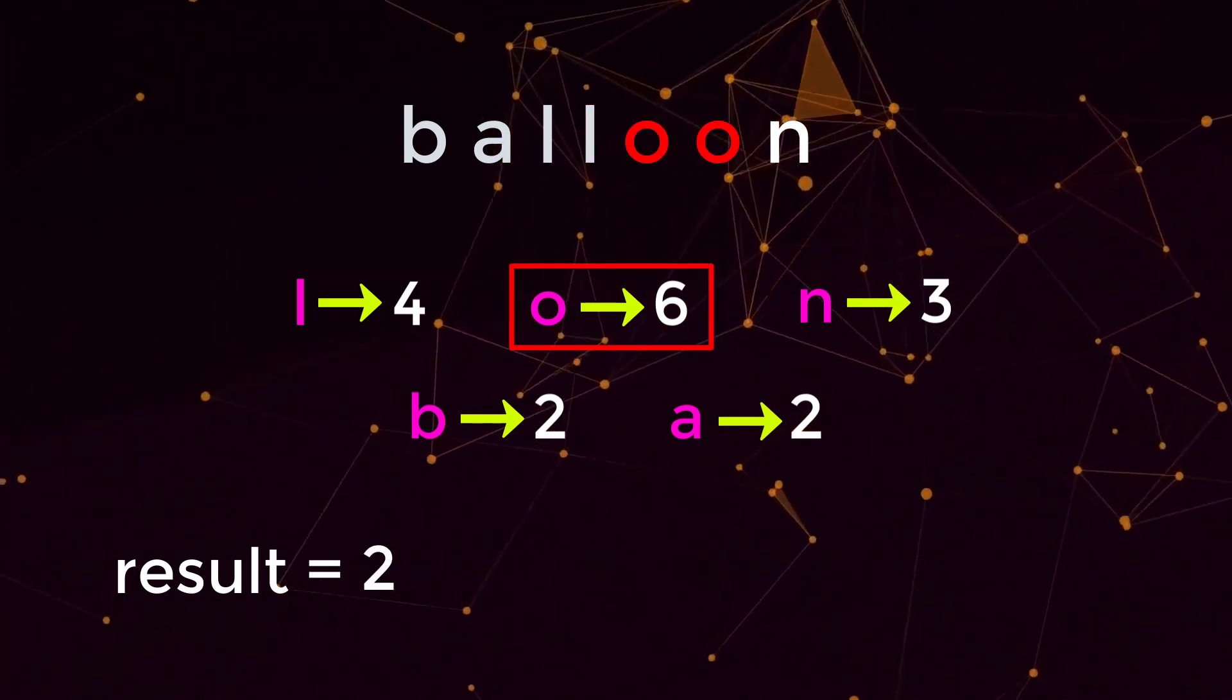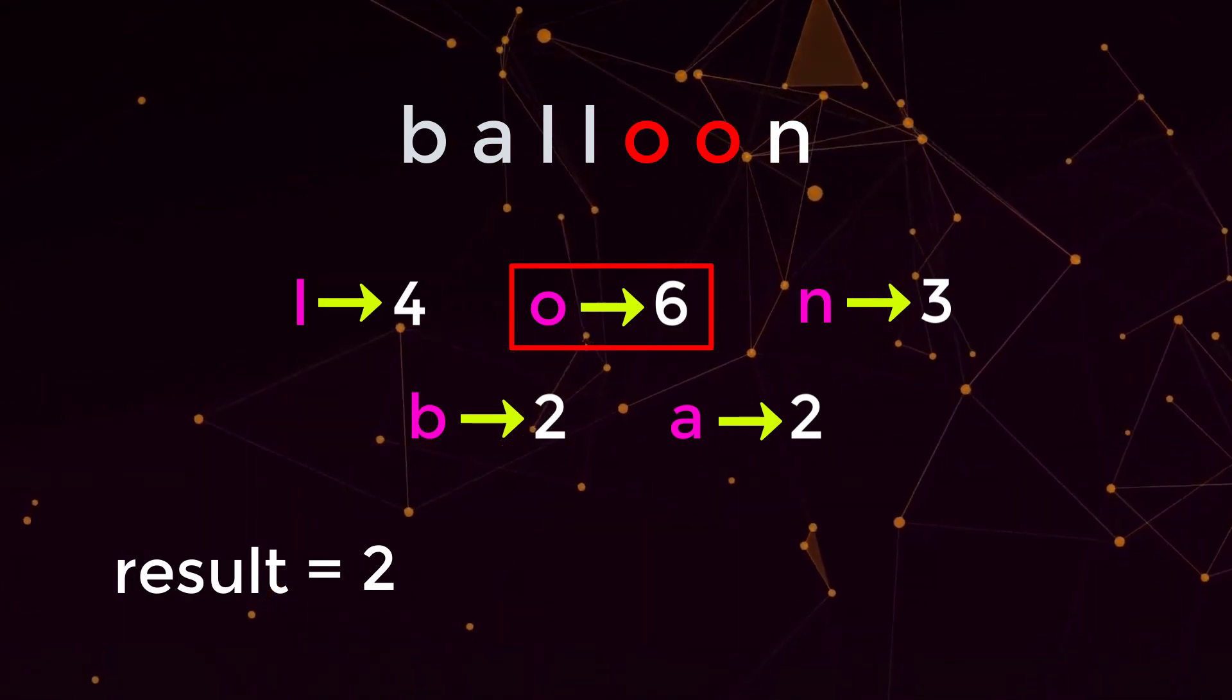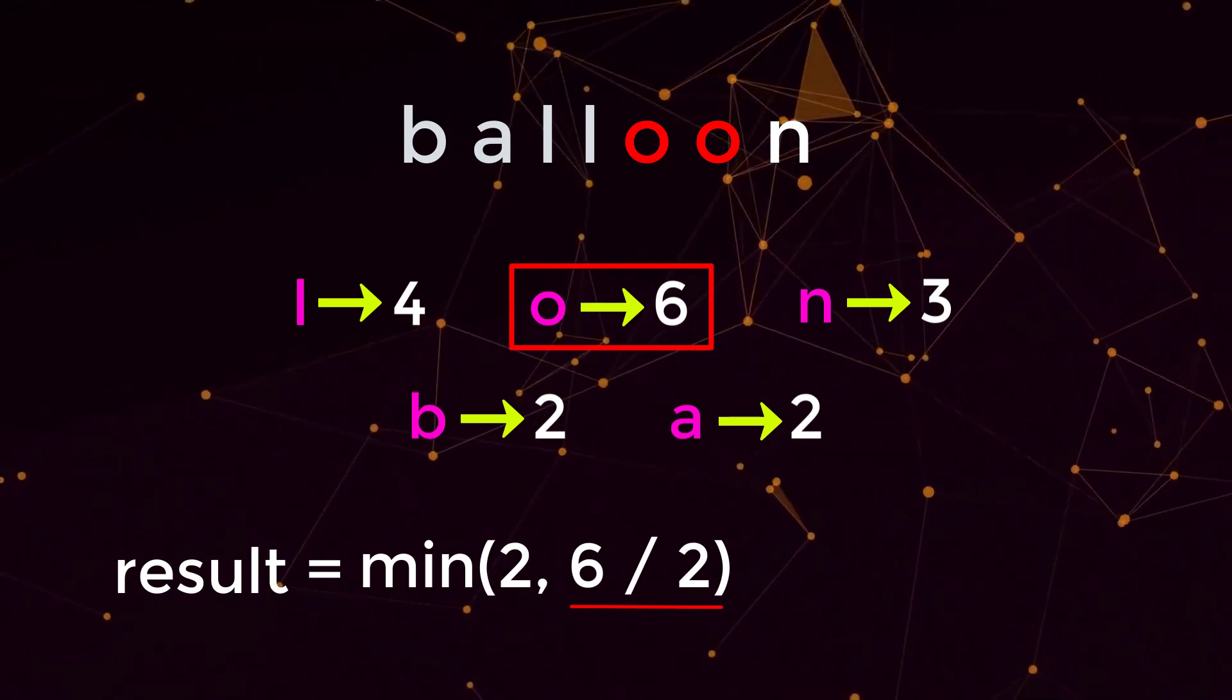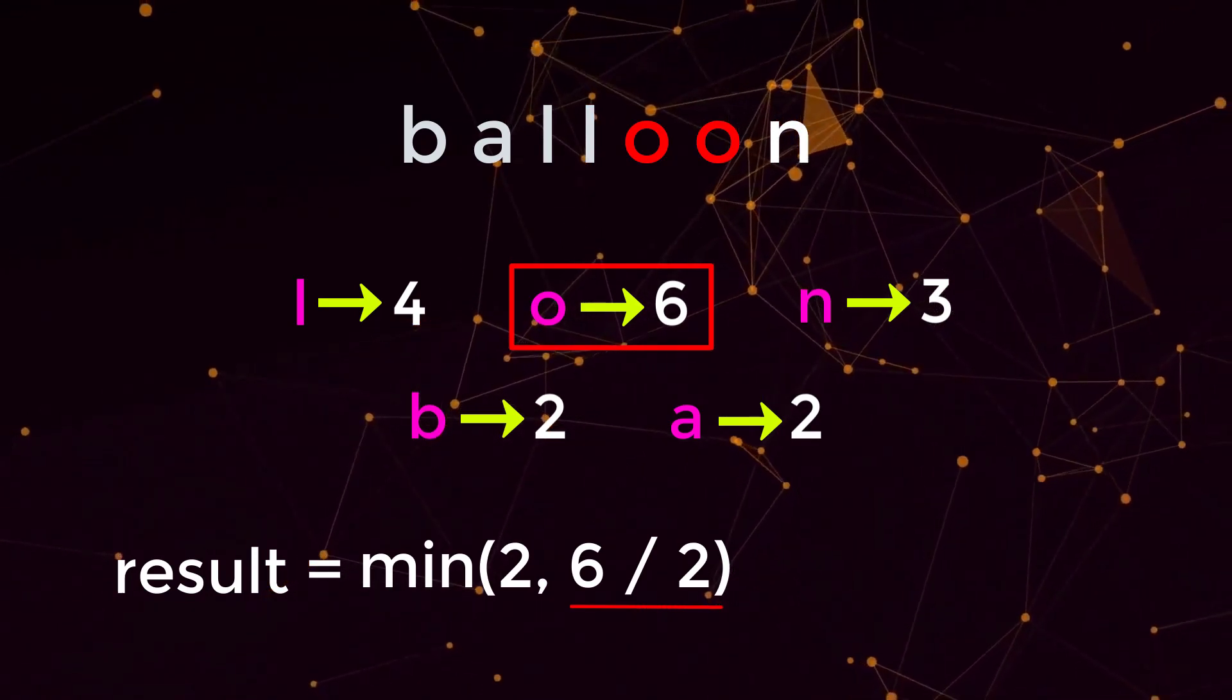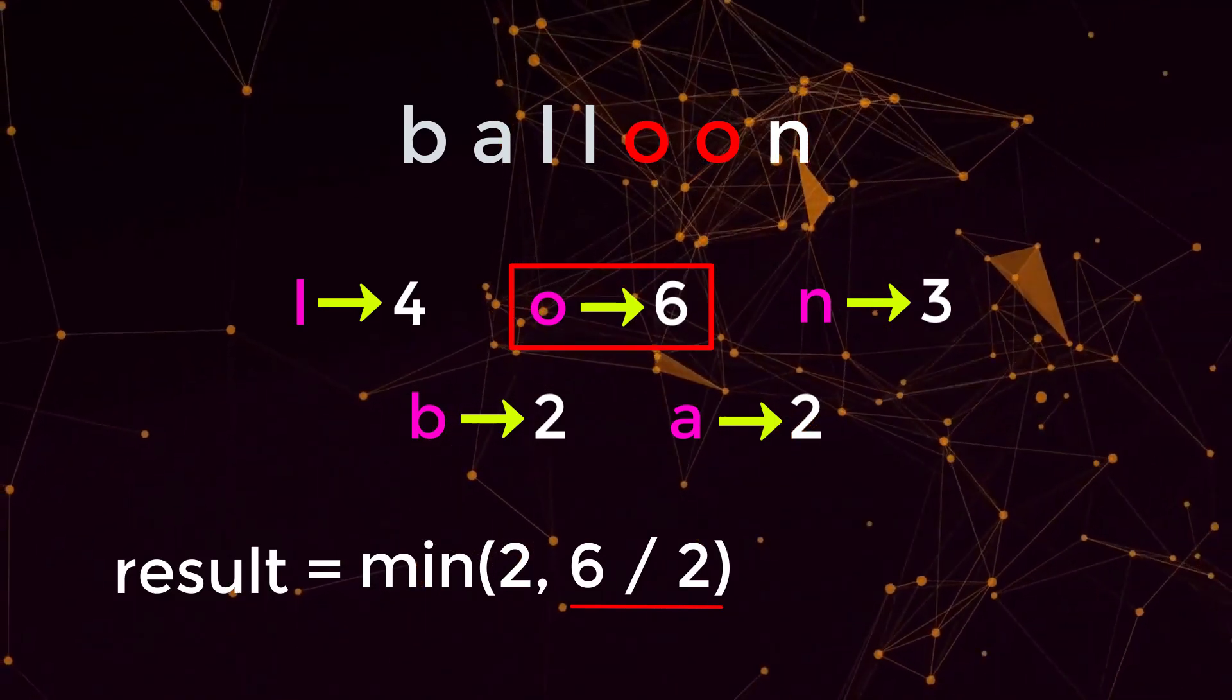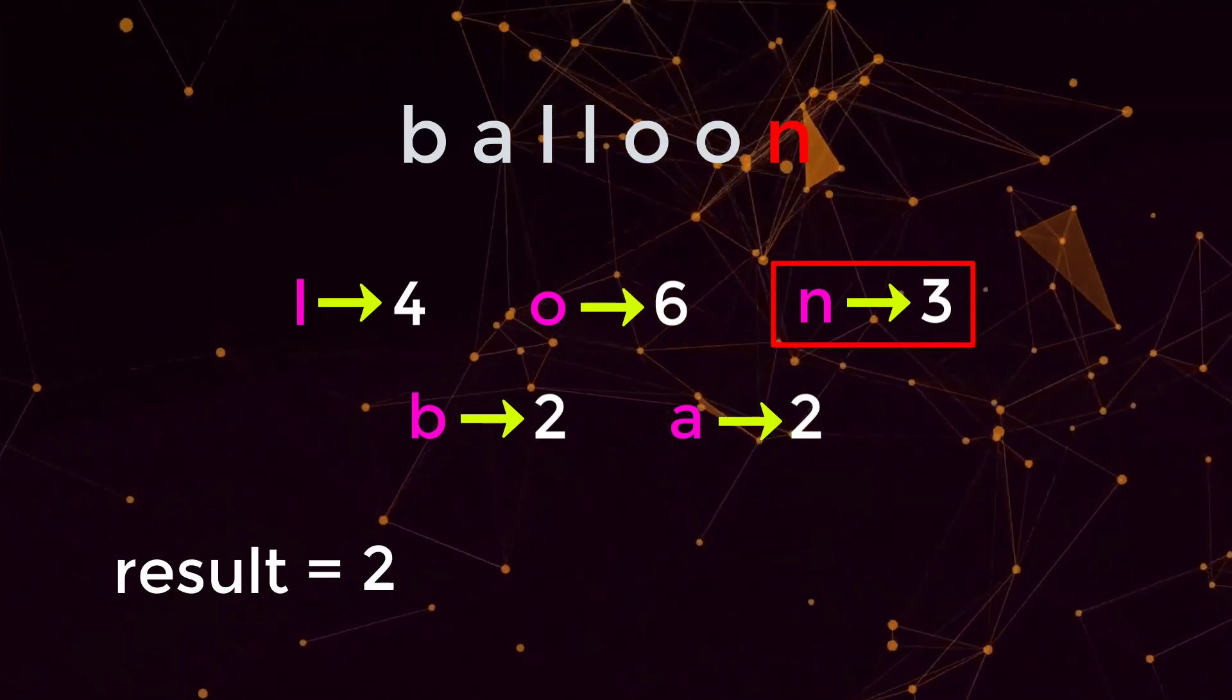Character o has a value of six, and it has two occurrences in the word balloon. That means if we do six divided by two, that would be three, and that is how many words we could make up with the number of o's that we were given. So if we do minimum between two and three, that would be two. And lastly, we look up n,